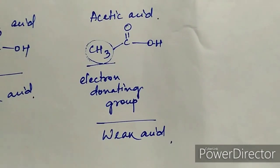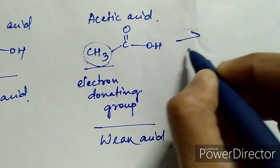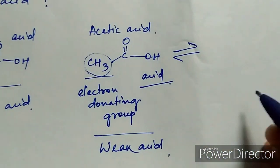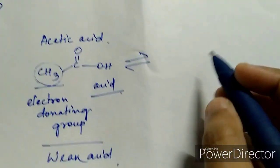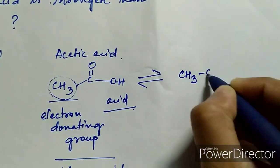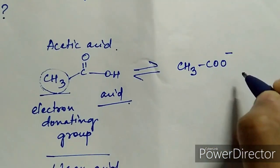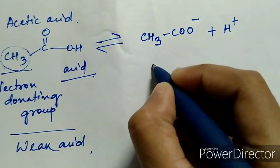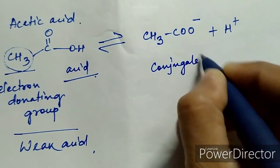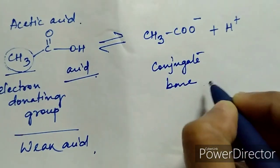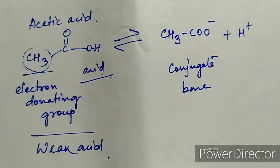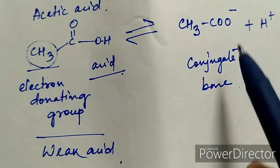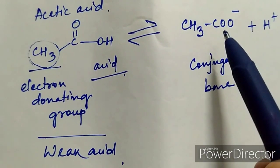We can also explain this in another way. If we split acetic acid, which is an acid, we get its conjugate base: CH3-C double bond O minus, plus H+. This is the conjugate base and H+.